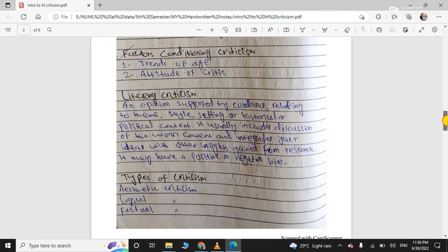When studying criticism, what things should we keep in mind? Two important things: trend of the age - we analyze the age and trends of that age - and second is the attitude of the critic.